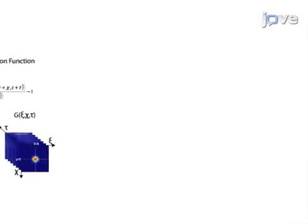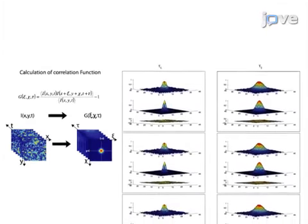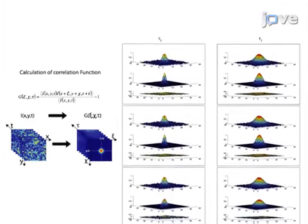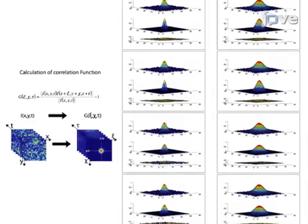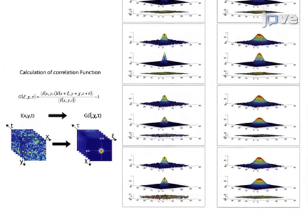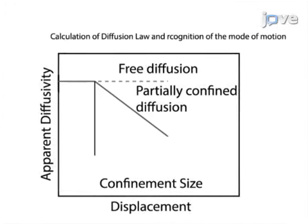Finally, the correlation function is calculated and the molecular diffusion law is extracted by Gaussian fitting. The resulting data identify the mode of motion of the lipid or protein under investigation.